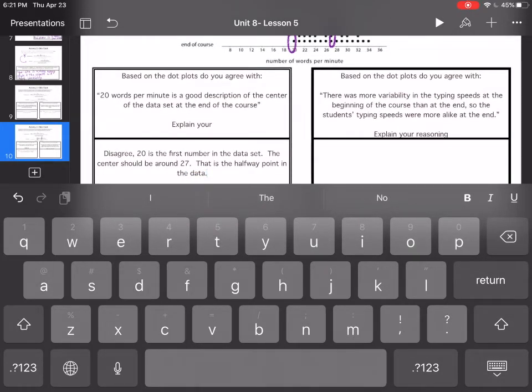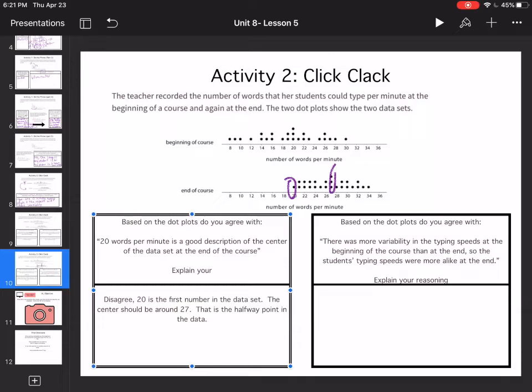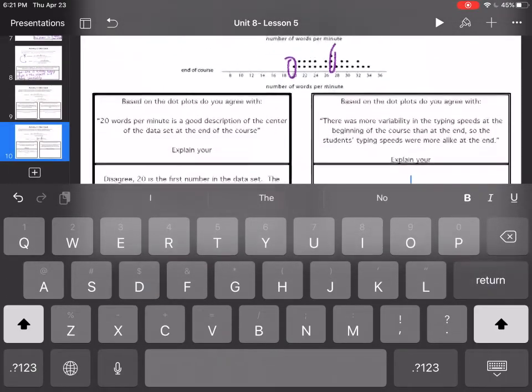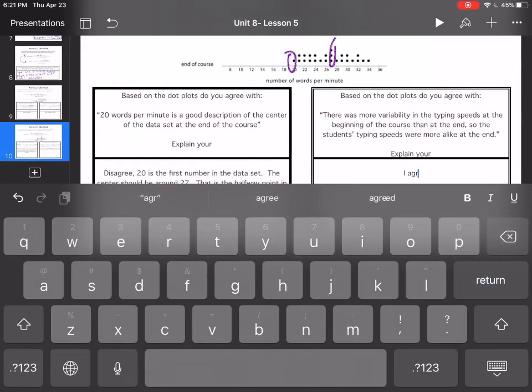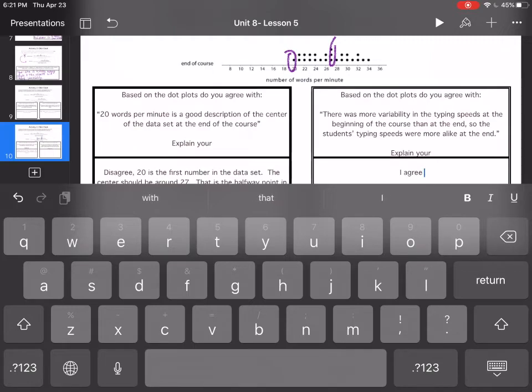All right so then there was more variability in the typing speeds at the beginning of the course than at the end of the course so that the students typing speeds are more alike at the end. Well that's true the smaller the spread the more alike they are so I agree. I agree the smaller the spread the more alike the data is.